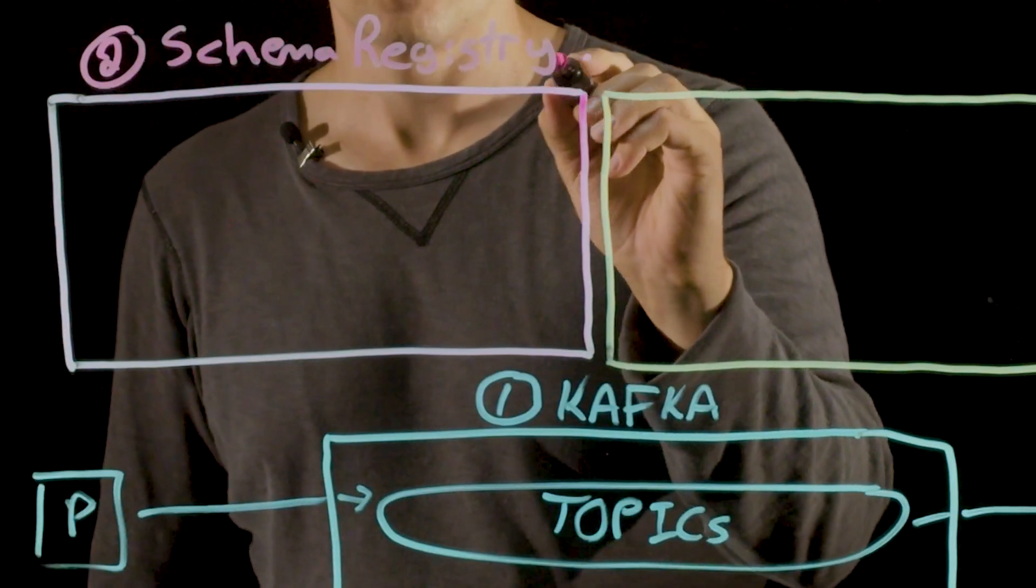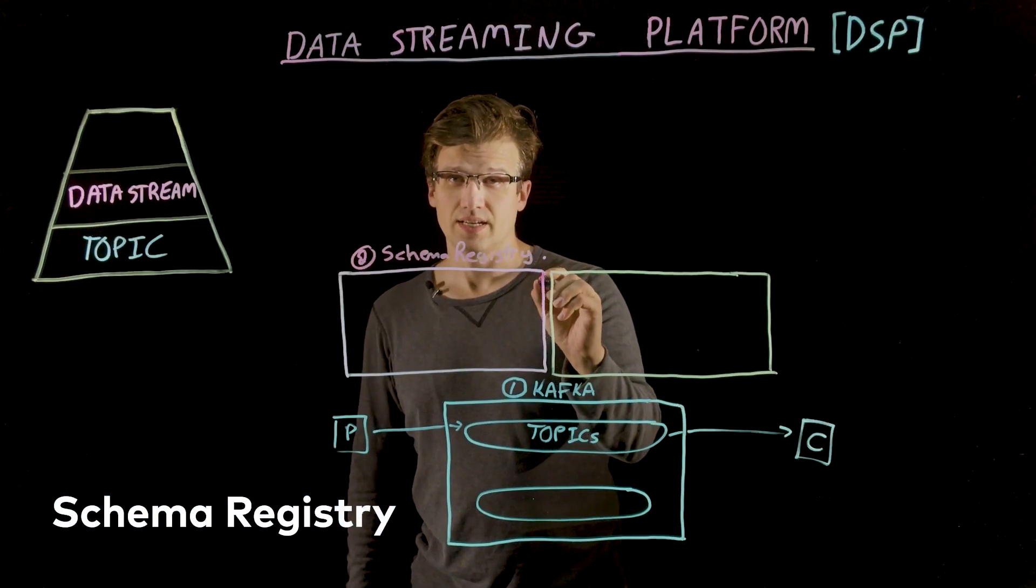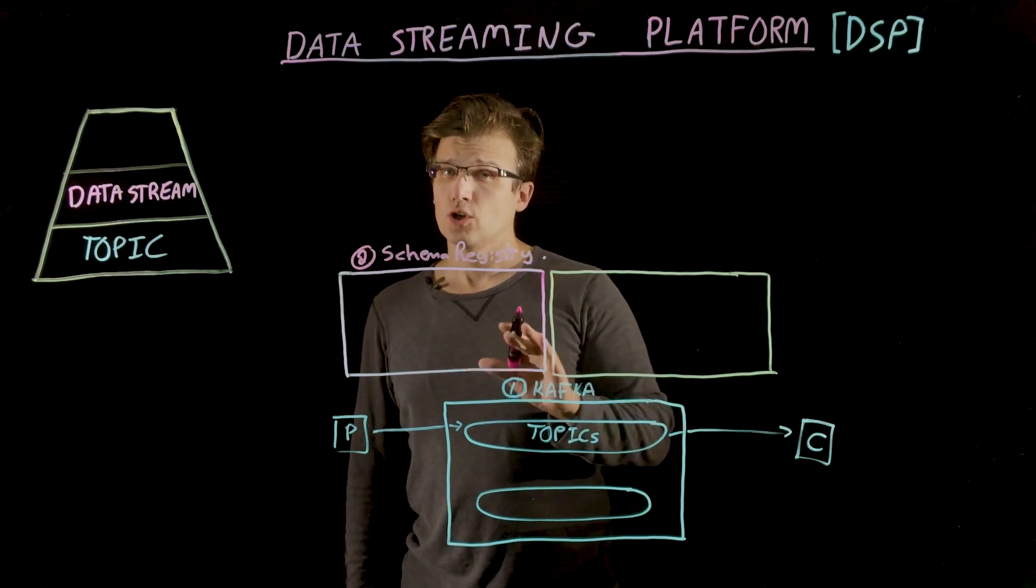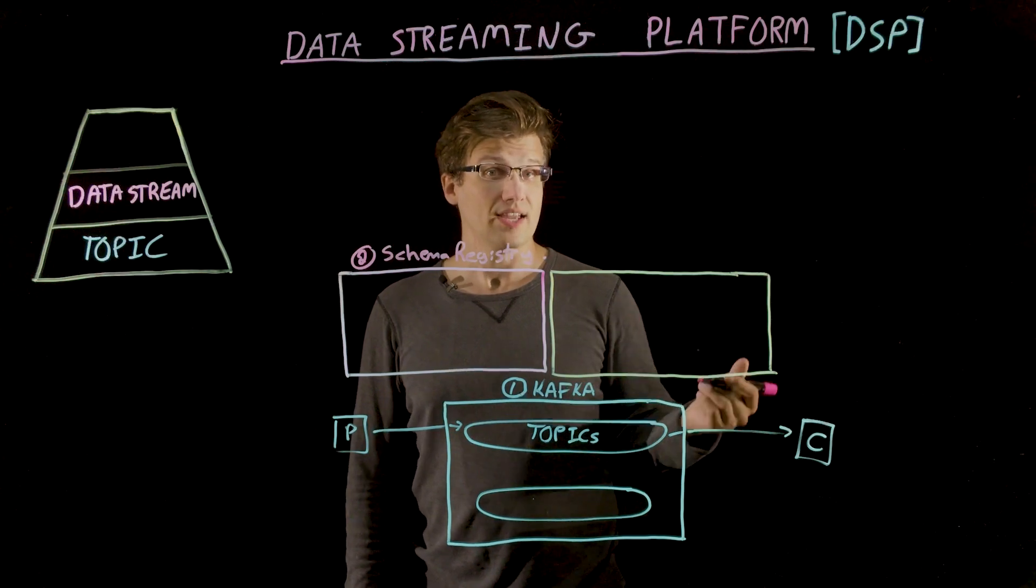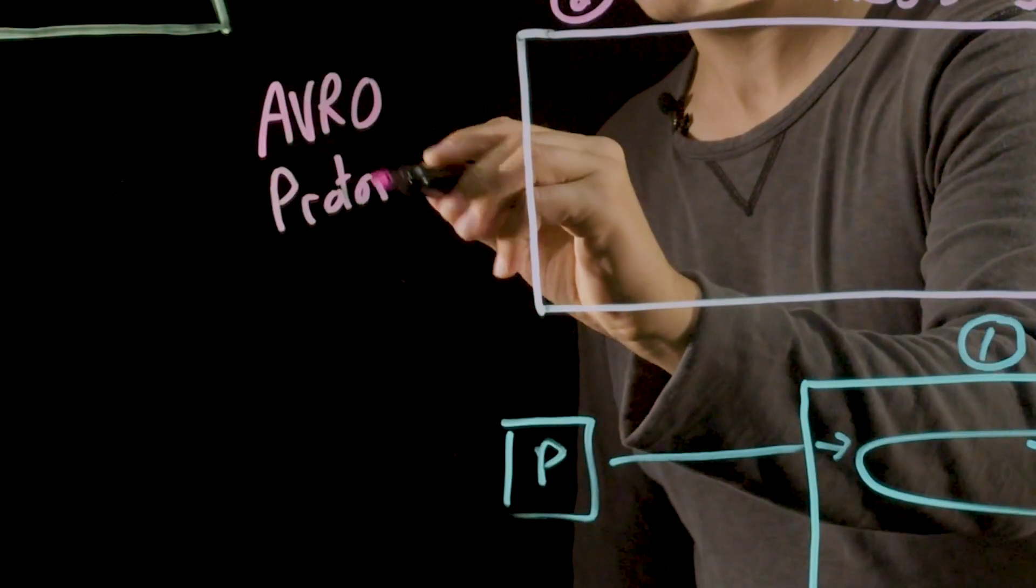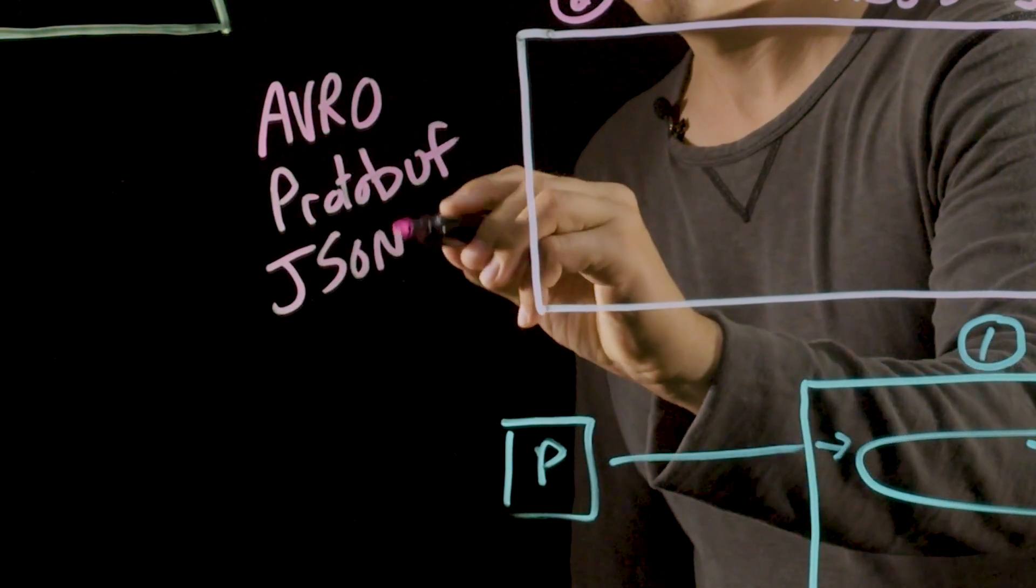The schema registry forms the second major component in the DSP. It's a major part of data governance. The first job is to provide explicit schema structures for your events, such as the popular Avro, Protobuf, or JSON schema formats.